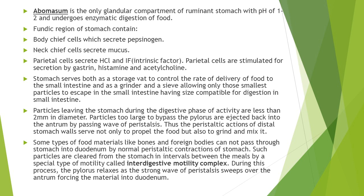All these stomach secretions constitute the gastric juice. The presence of food in the abomasum causes secretion of gastrin from the gastric antrum, which then causes secretion of gastric juice. Gastric juice contains water, hydrochloric acid, electrolytes, pepsin, mucus, and other inorganic substances. So the presence of food in the abomasum causes secretion of gastrin, and gastrin causes stomach secretions which combine to form the gastric juice.